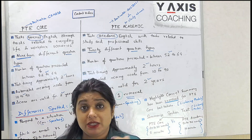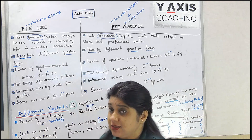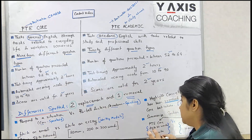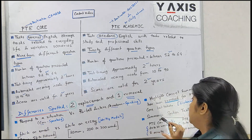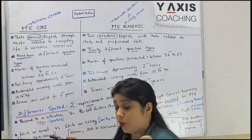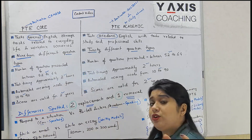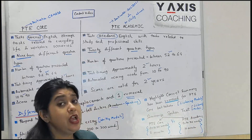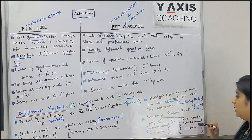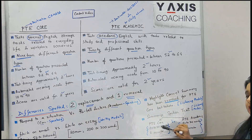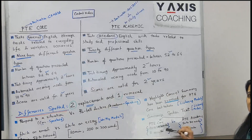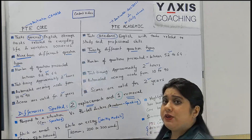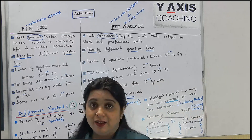For PT Core test takers, the time has been reduced - you now get 8 minutes for 'summarize spoken text.' The word limit set is 20 to 30 words. While a PT Academic test taker has to write a summary of 50 to 70 words, a PT Core test taker has to write a summary of 20 to 30 words. The test has definitely become easier.